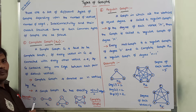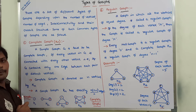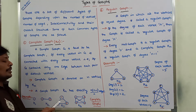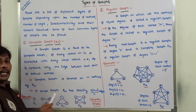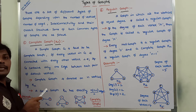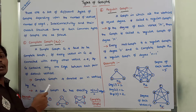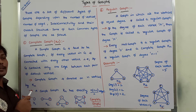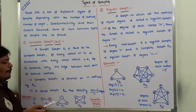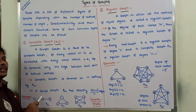Consider this next example. Vertex 1 is connected with the remaining vertices: 1 is connected with 2 and 3. Vertex 2 is connected with 1 and 3. Vertex 3 is connected with vertex 1 and vertex 2. Every vertex in the graph is connected with the remaining vertices, so that graph is also called a complete graph — this is K3 with 3 vertices.